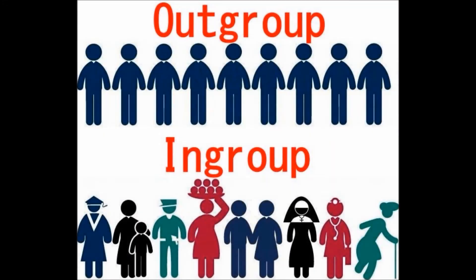Today's term from psychology is outgroup homogeneity effect. Let's put this in simple terms. You're a member of a group called the in-group. Nearby is another group that's similar to your group — it's called the out-group. You're a member of the in-group, but not the out-group.